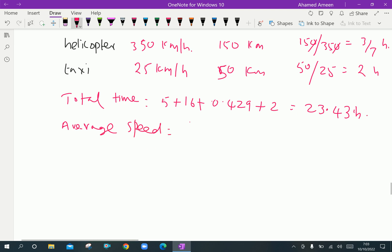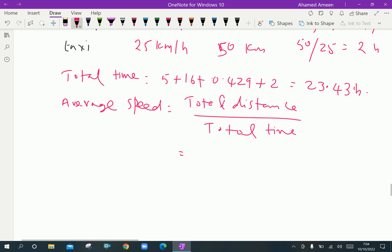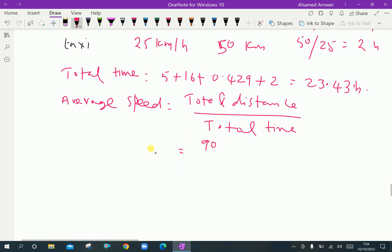Now average speed is equal to total distance by total time, which is equal total distance is 900 over total time is 23.43, which is equal 900 divided 23.43 which is equal 38.41 kilometer per hour.